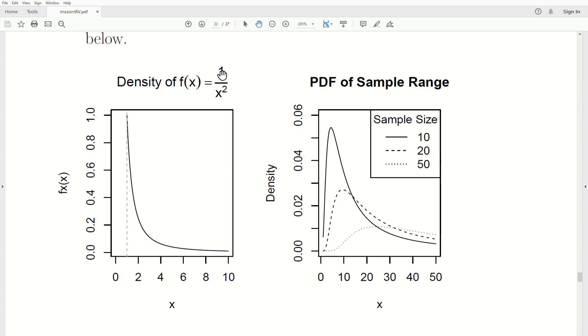This is the original density, 1 over x squared, and this is the plot of it. This is the PDF of the sample range. If we take a sample size of 10, this is what we get. Notice that the mode is around 4 or 5, and that makes sense. If you take 10 observations, the highest probability of being a difference of 4, and that's what this indicates.